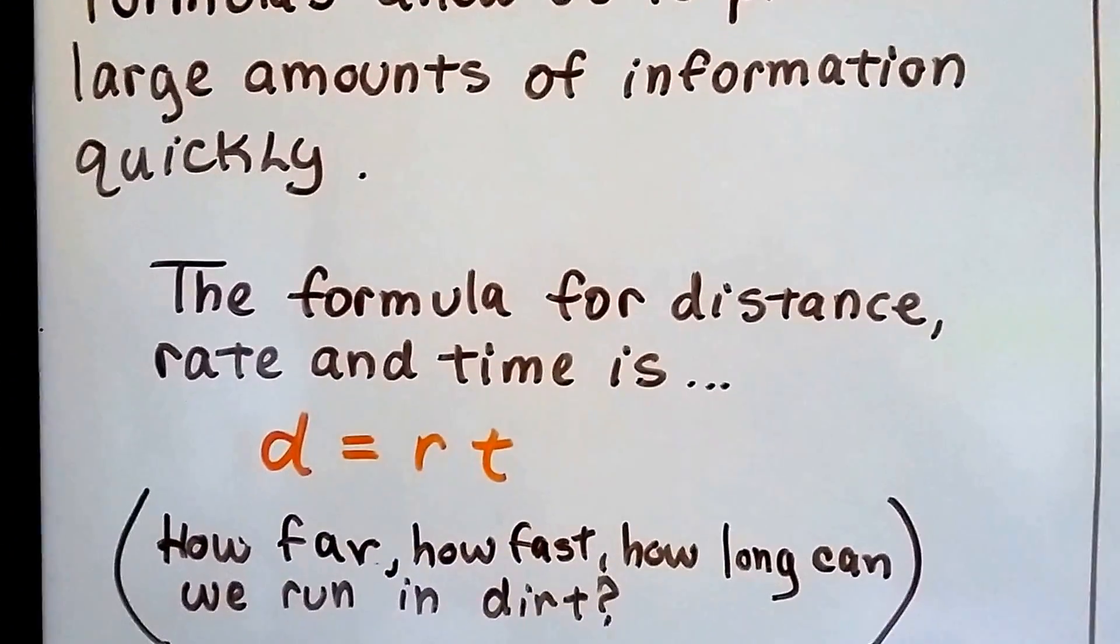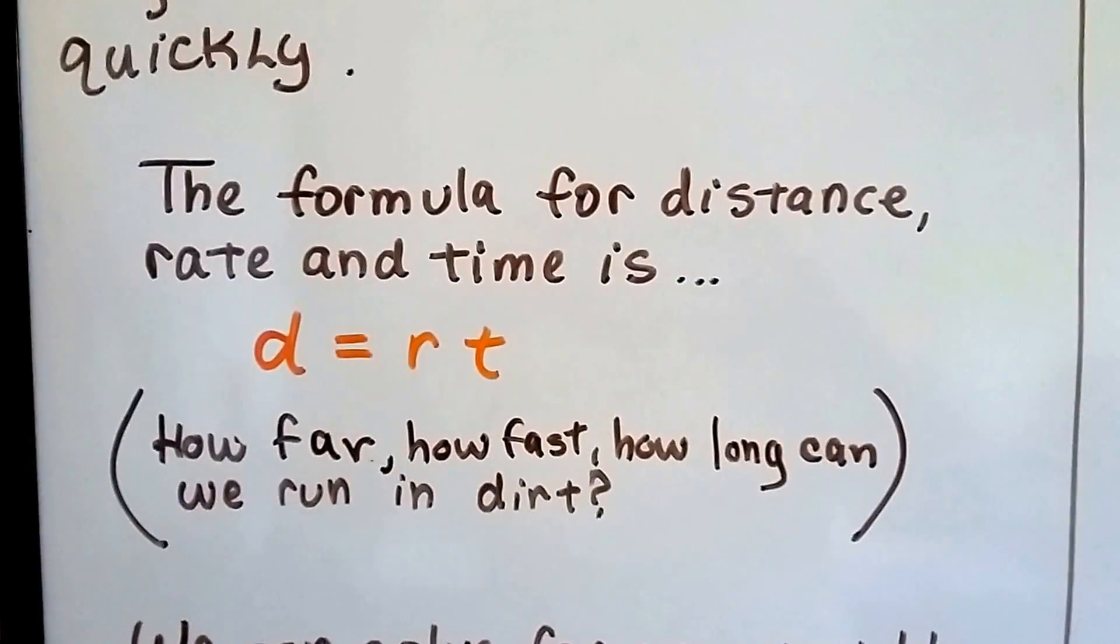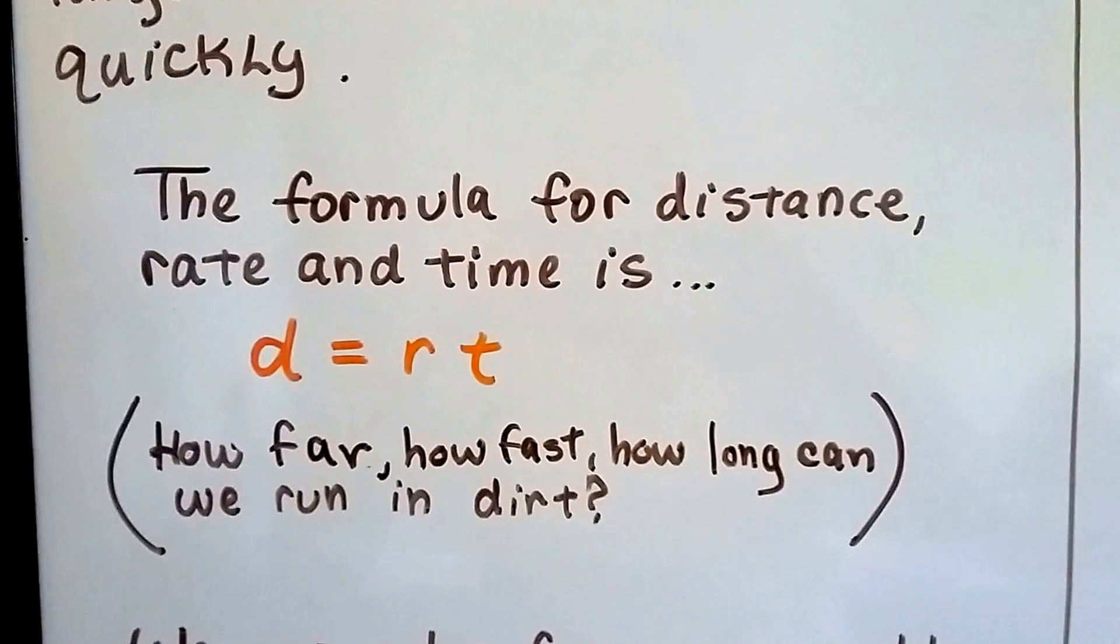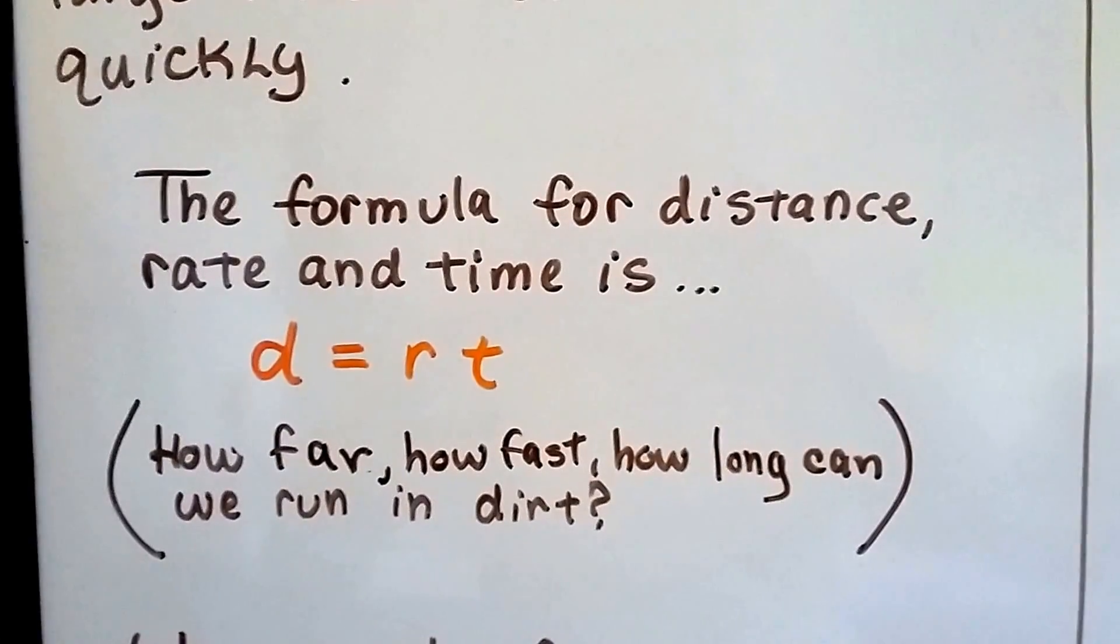The formula for the distance, rate, and time is d equals rt. Doesn't it kind of look like the word dirt? It's how far, how fast, and how long we can run in dirt. Think of it that way, then you'll remember it.